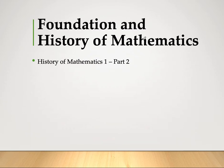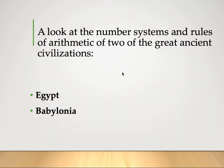We're now in our next video in the foundation and history of mathematics, History of Mathematics Part Two. We're done with part one, so try to check that video before watching this one. We're going to look at the number systems and rules of arithmetic of two great ancient civilizations. First we're going to look at Egypt in this video, and then in the next video we're going to look at Babylonia.